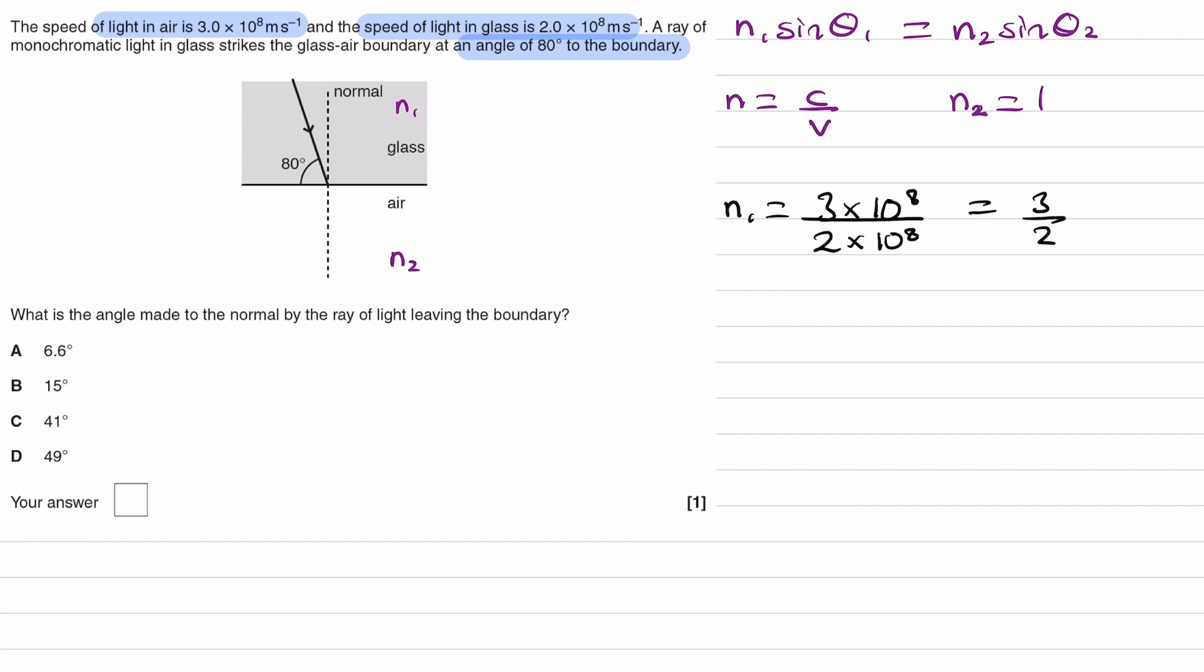This is something that a lot of students make a mistake on. The angle of incidence is always the angle to the normal. We're given the angle to the boundary, we want the angle to the normal, so that will be this angle here, this would be theta 1. By looking at the diagram, knowing that this is 90 degrees, theta 1 must then be 10.